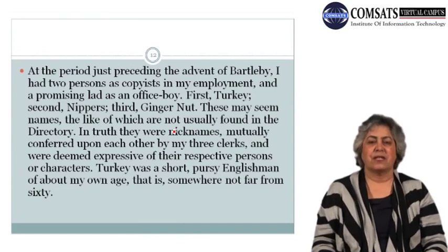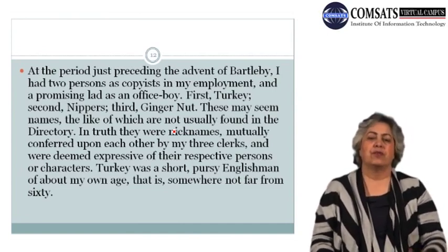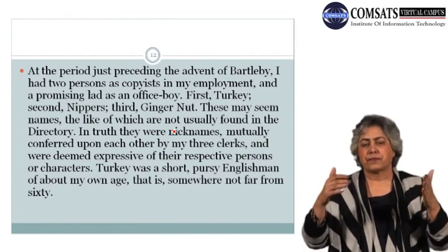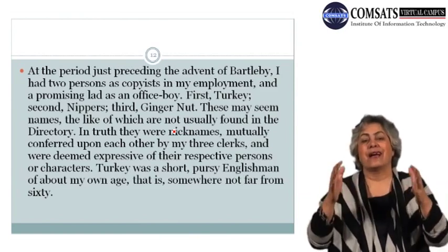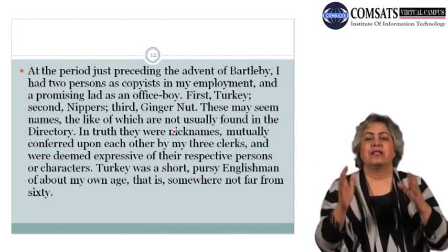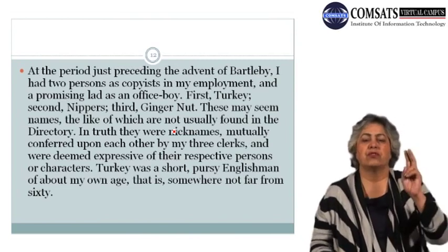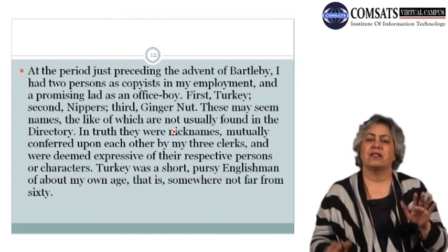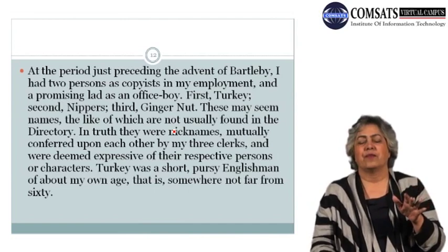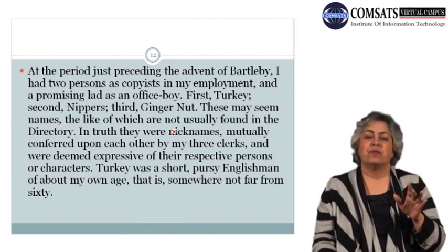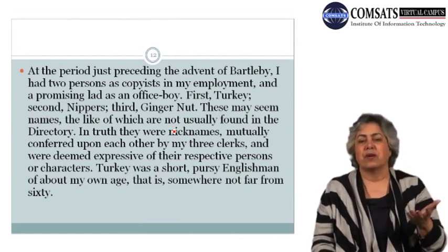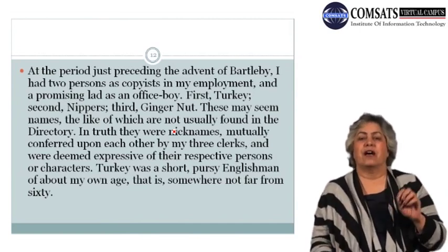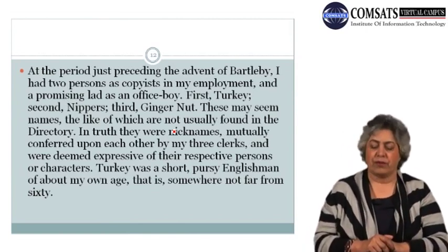At the period just preceding the advent of Bartleby, he had two persons as copies in his employment and a promising lad as an office boy. Melville wants to give the description of the office because the people working in it and the actual physical office space have a very important role to play in this story. He says there were two copies or two clerks. The first was Turkey, the second was Nippers, and then there was this little boy who was called Ginger Nut — a runner, a messenger boy.